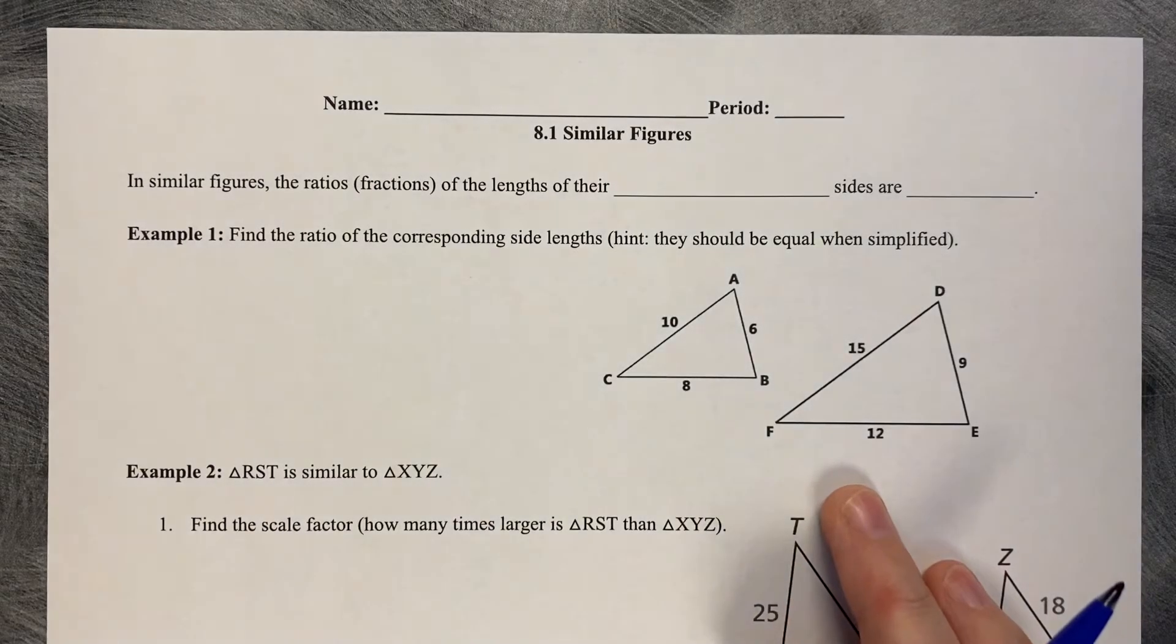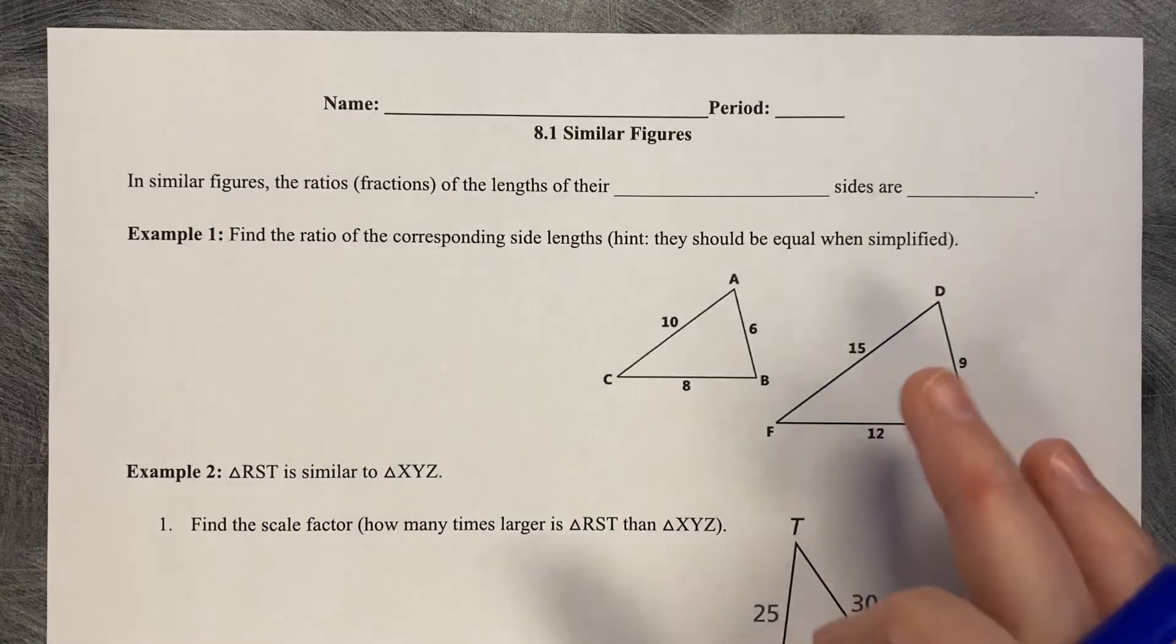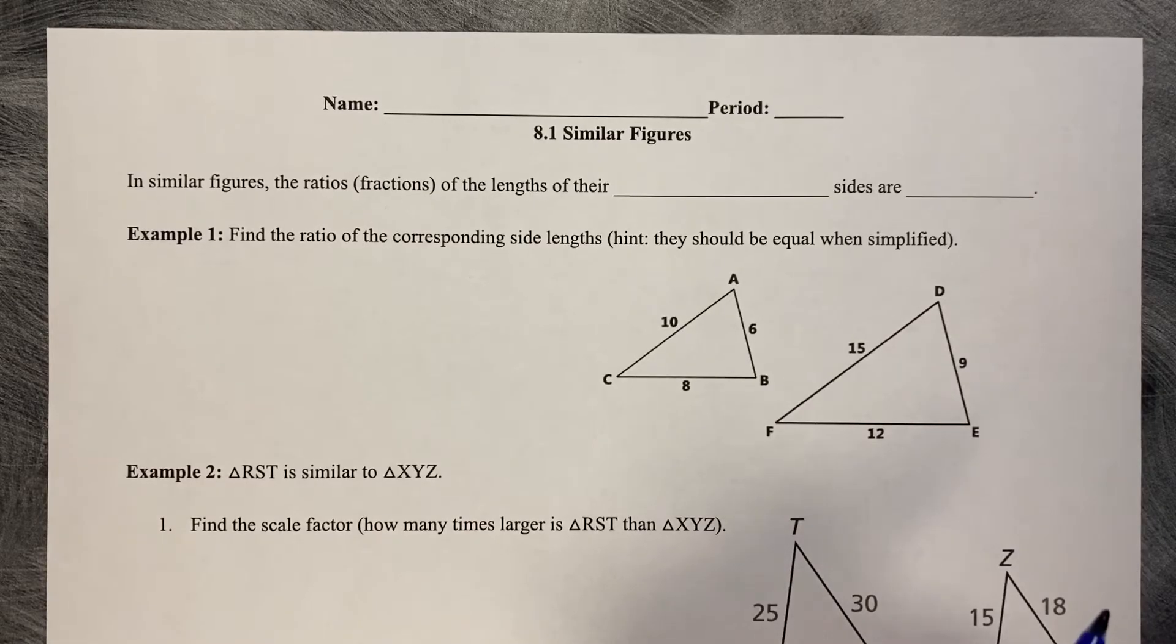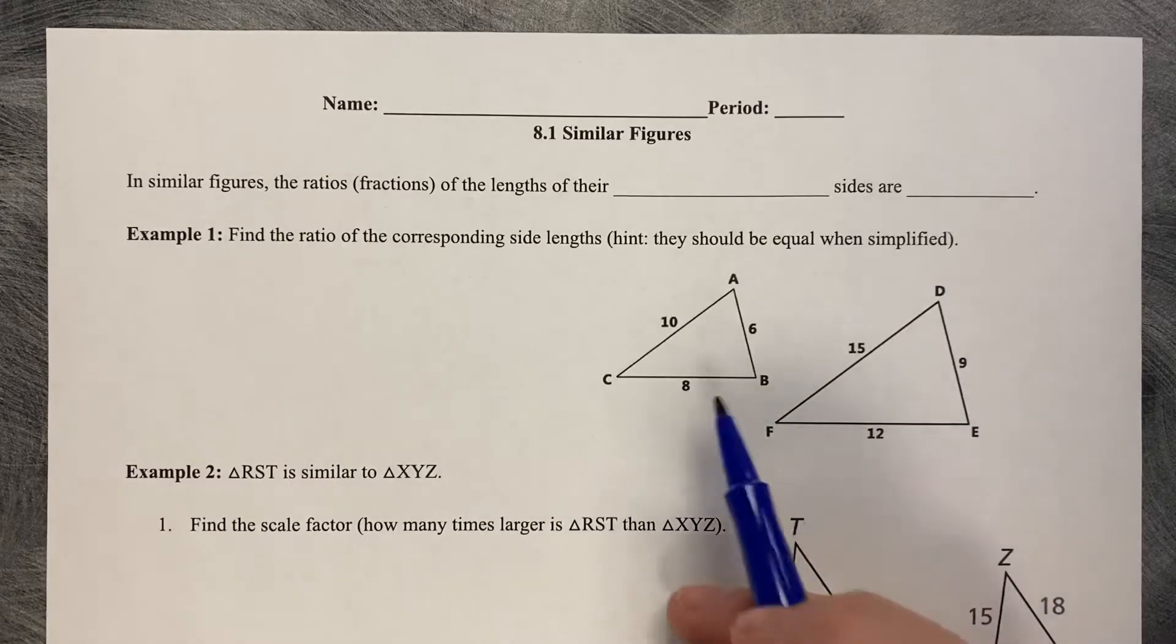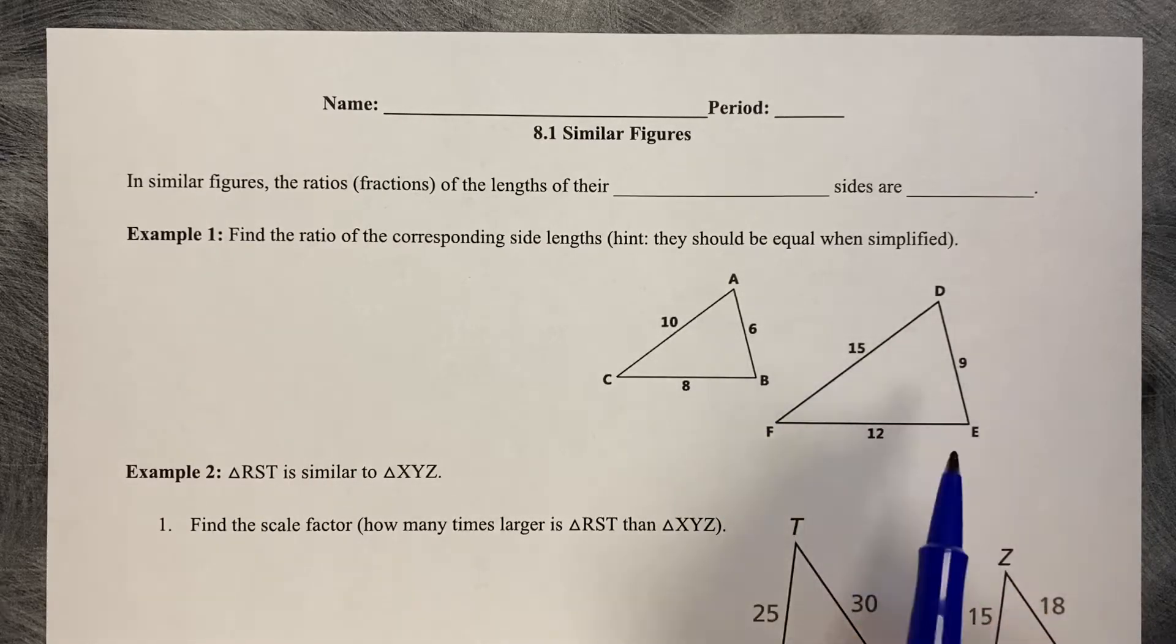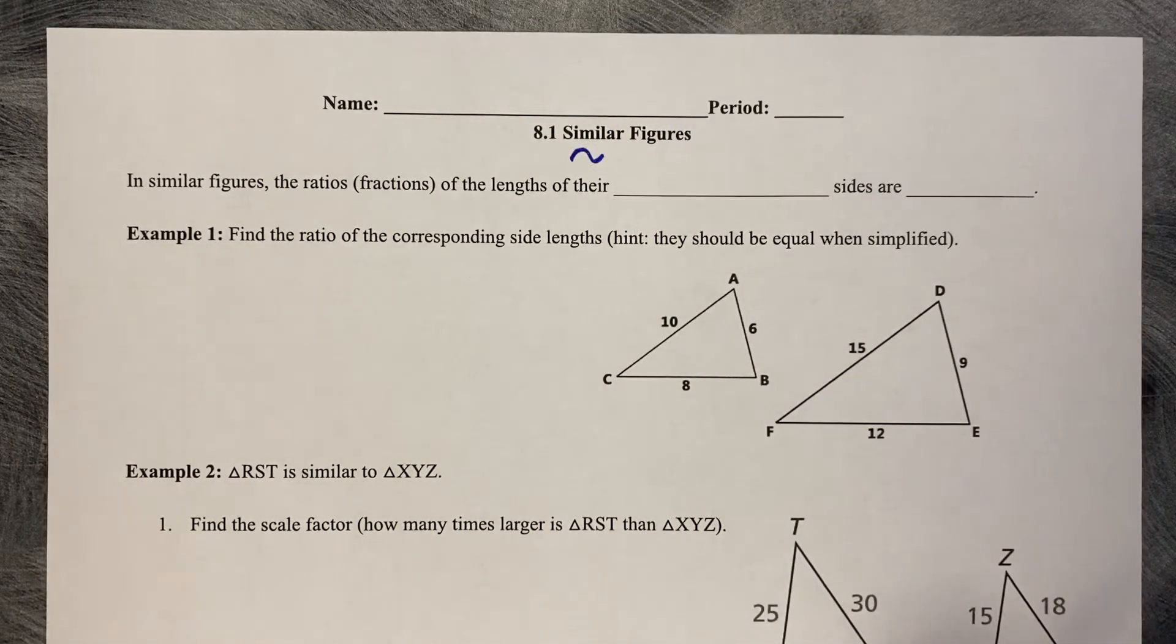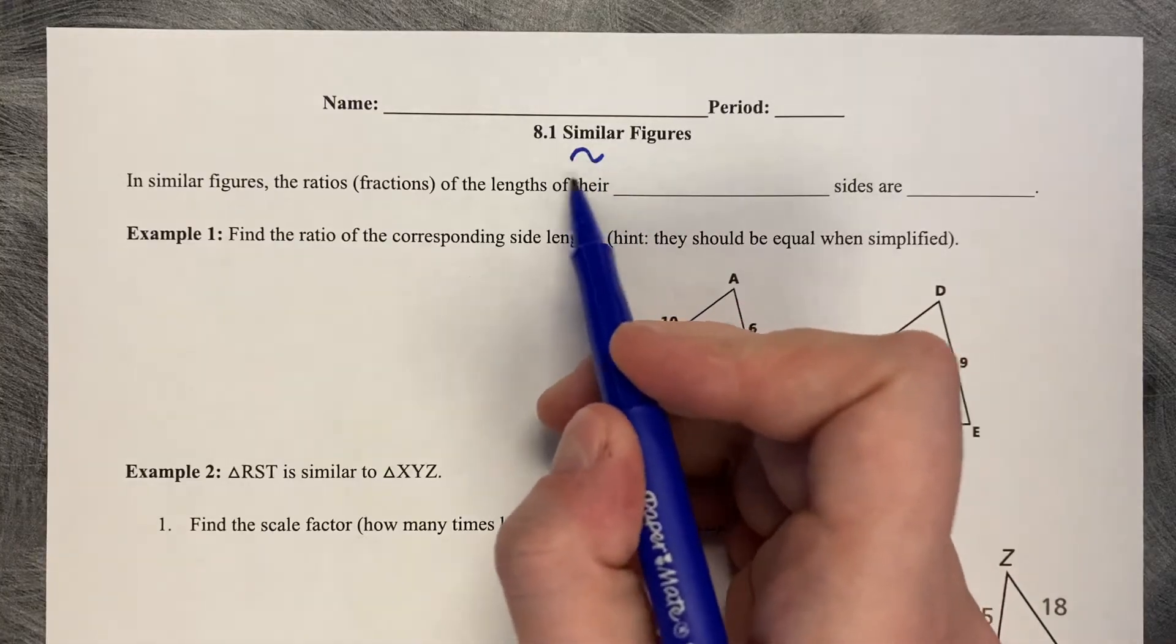8.1 Similar Figures. This is a new chapter and we're talking about something called similar figures, not congruent figures. The similar symbol is just a single swoop line instead of having the equal sign underneath. Recall that the congruent symbol has two lines underneath it, but for similar it's just a single loop symbol.